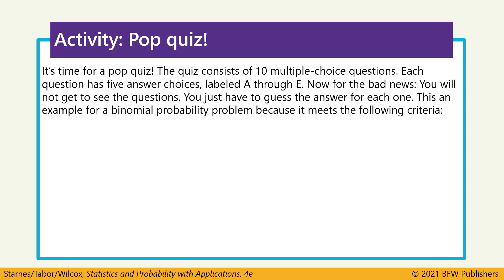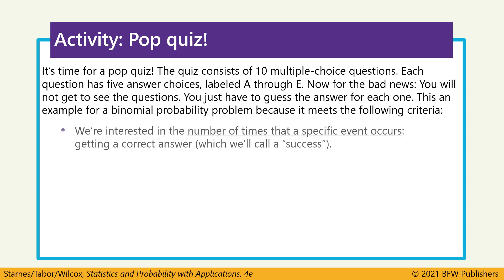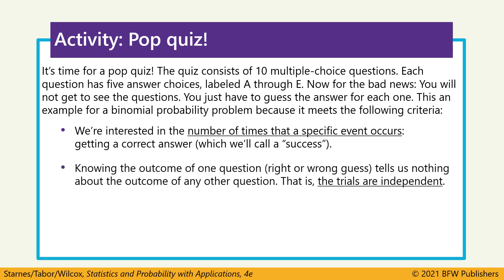This is a binomial probability problem because it meets the following four criteria. The first and most important is that it counts the number of times a specific event occurs. In this case, we have 10 questions and we're interested in how many we get correct — that'll be called a success. The next requirement is that these trials are independent, meaning that getting the first one correct doesn't change the probability of getting the next one correct, and the same applies to getting it wrong.